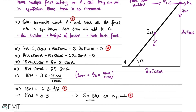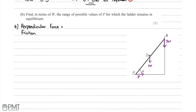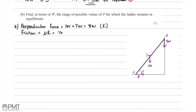In part (b) we're asked to find the range of possible values of p for which the ladder remains in equilibrium. We recall that p is a horizontal force applied to stop the ladder from slipping. There are two components: the perpendicular force, which consists of the weight of the builder and the ladder — 1w plus 7w — giving 8w, which we denote F1. The friction force is mu times F1 = (1/4) times 8w = 2w.